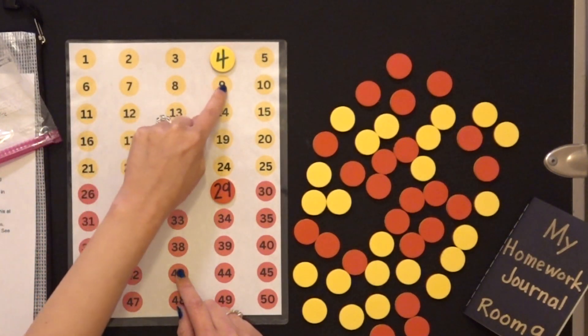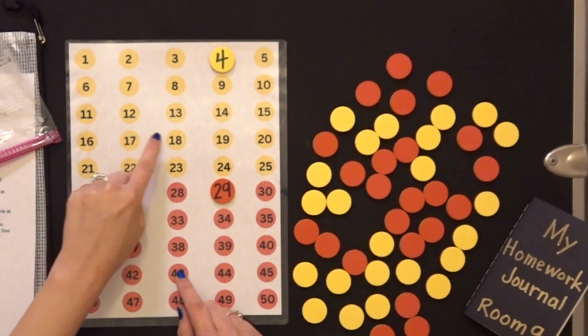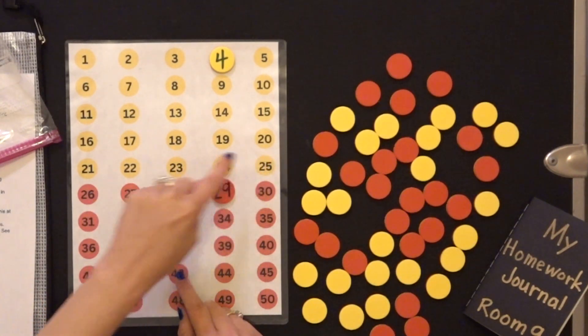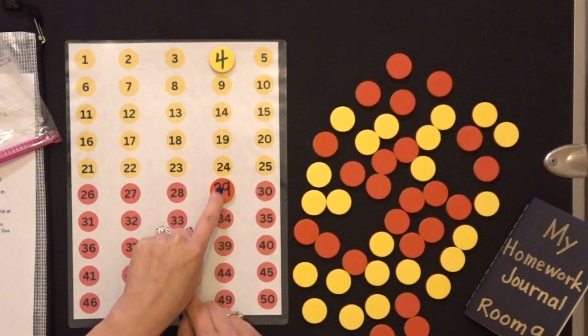5, 6, 7, 8, 9, 10, 11, 12, 13, 14, 15, 16, 17, 18, 19, 20, 21, 22, 23, 24, 25, 26, 27, 28, 29.